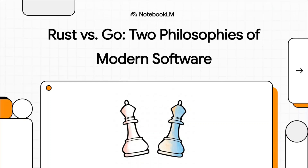Let's talk about two of the biggest names in software today: Rust and Go. You might think this is just another tech face-off, but it's really so much deeper. We're talking about a genuine clash of philosophies — two totally different ways to think about building software that's safe, fast, and reliable.